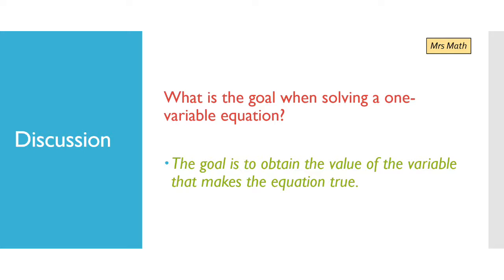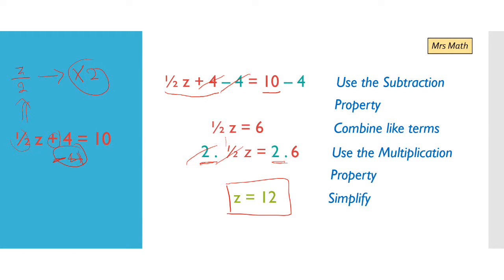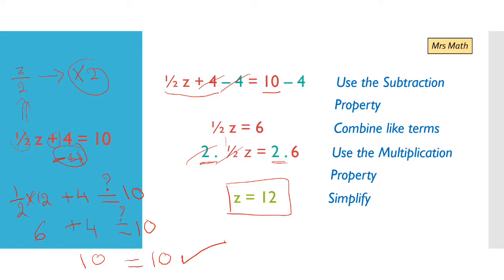What is the goal when solving a one-variable equation? The goal is to obtain the value of the variable that makes the equation true. Let's check using the last example: we have half z plus 4 equals 10, and we got z equals 12. Substituting, half times 12 plus 4 — half times 12 is like 12 divided by 2 equals 6, so 6 plus 4 equals 10. And it is equal to 10, so this value is correct.